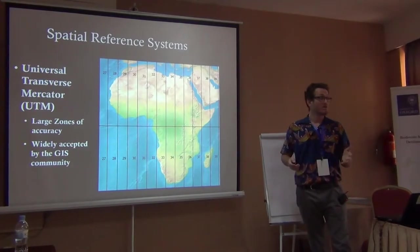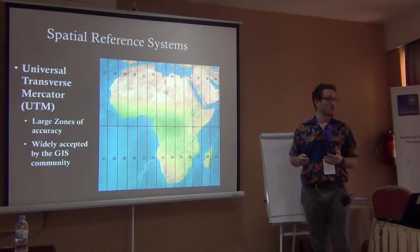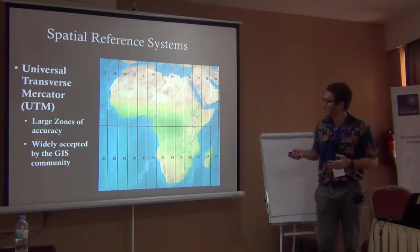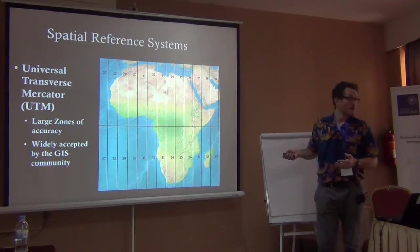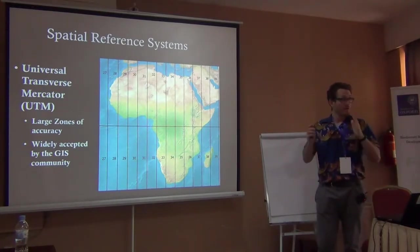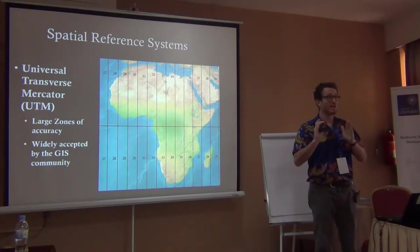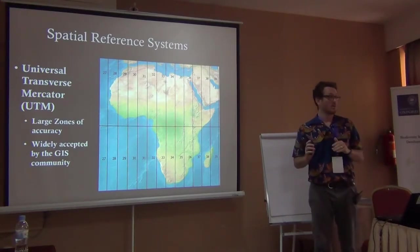Probably the most common projection system is the Universal Transverse Mercator, or UTM, which divides the world into zones of longitude — every gap of longitude has its own UTM zone. For Tennessee, for example, the zones are 16 and 17. You can select the appropriate UTM zone coordinate reference system and know that your data's geometry will be more or less preserved.